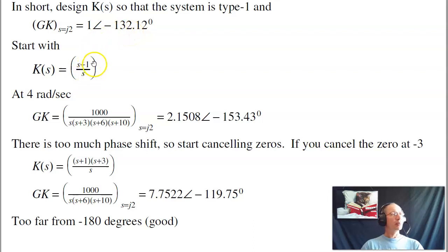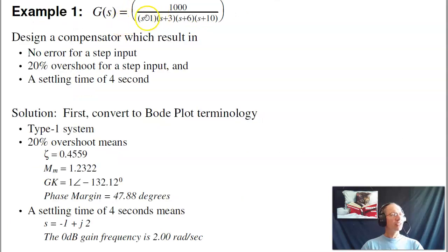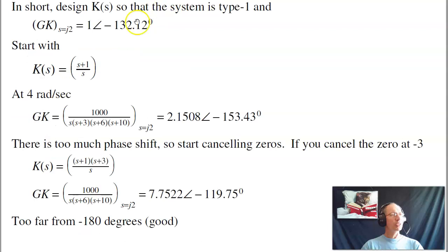Let's start with the compensator, s plus 1 over s. The 1 over s I know, because I want it to be type 1. If I add a pole, I can add a zero, and let's cancel the slowest stable pole, move that to the origin. That's my first step.